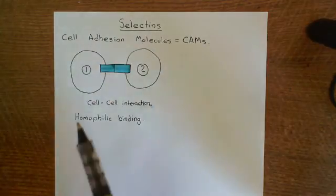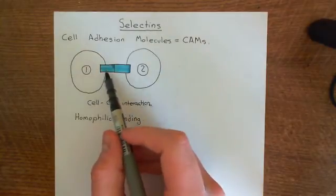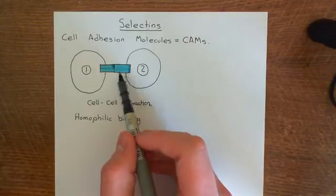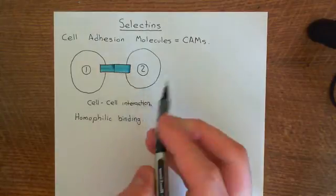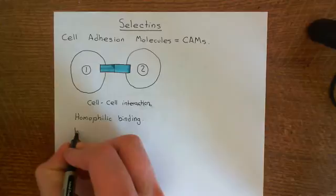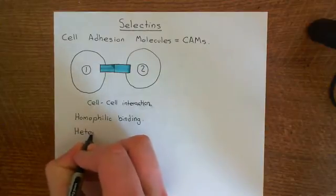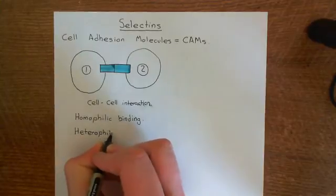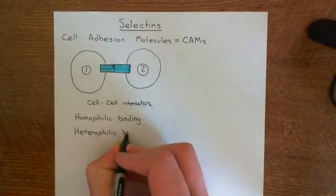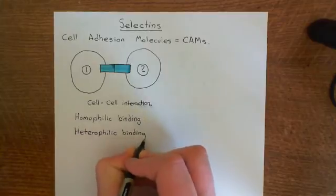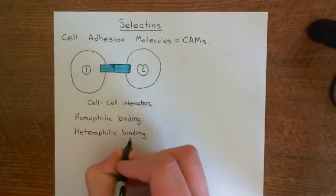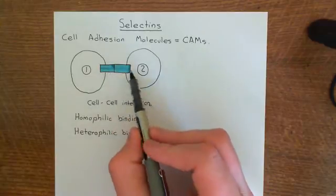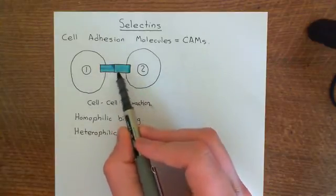If, on the other hand, the adhesion molecule of cell one was different from the cell adhesion molecule on cell two, then that would be what is known as heterophilic binding. If they are not the identical protein, it would be known as heterophilic binding — hetero means different. So you can have homophilic or heterophilic binding depending on whether the cell adhesion molecule on cell one is the same as the one on cell two.